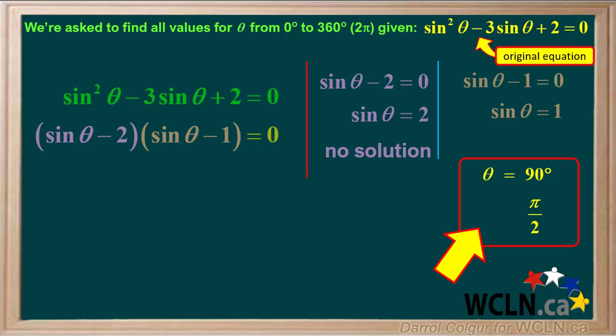In summary, 90 degrees, or pi over 2 radians, will give an exact solution to the original equation that was given. You can check this by substituting 90 degrees in for theta on the left side of the original equation and seeing if you get 0 for an answer.